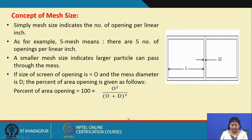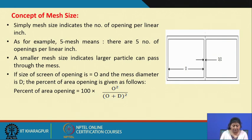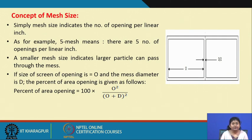Mesh size indicates the number of openings per linear inch. For example, 5 mesh means there are 5 openings per linear inch. A smaller mesh size indicates larger particles can pass through. So 4 mesh means only 4 perforations per inch, while 200 mesh means 200 openings per inch length — obviously that size fraction will be a smaller one.